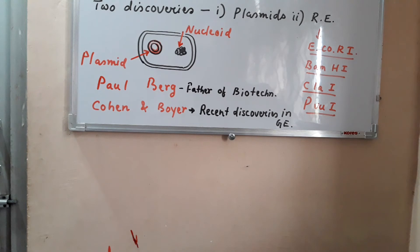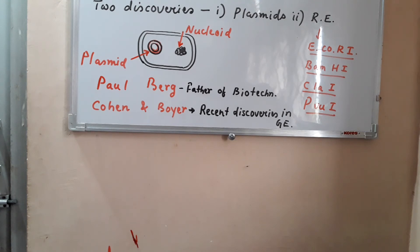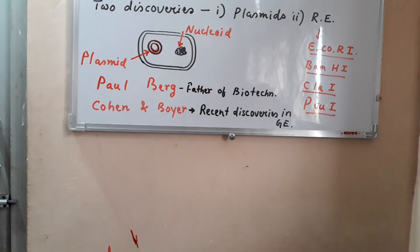Plasmids are extra-nuclear, extra-chromosomal, circular, double-stranded DNA, discovered by William Hayes and Joshua Lederberg. The copy number of plasmids refers to the number of plasmids present in a bacterial cell. The greater the number of plasmids in a bacterial cell, the greater the usefulness of that bacteria. Plasmids can be extracted from the host bacterial cell.